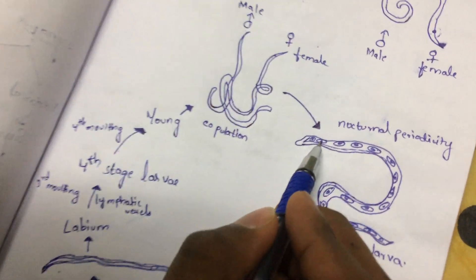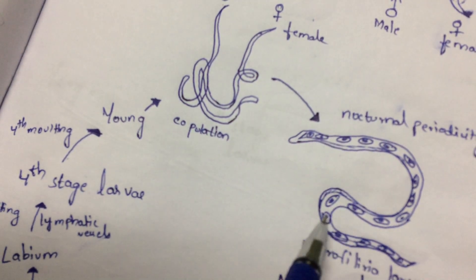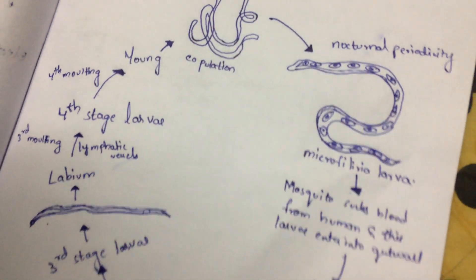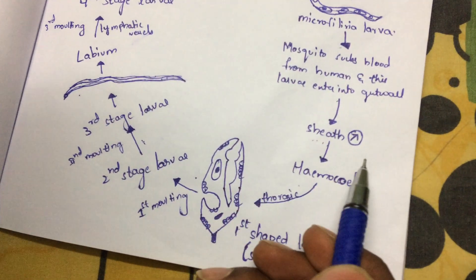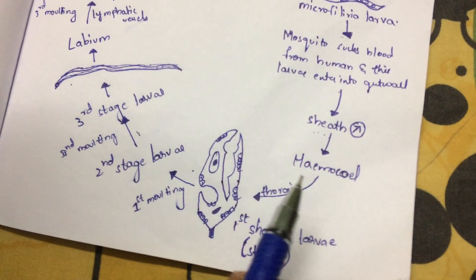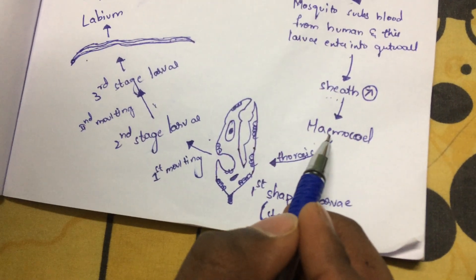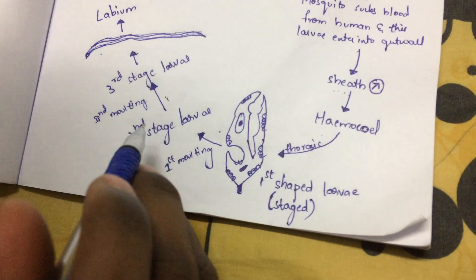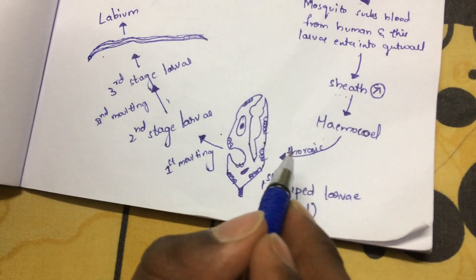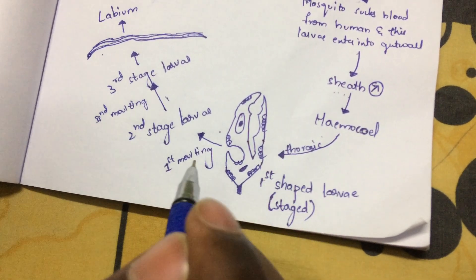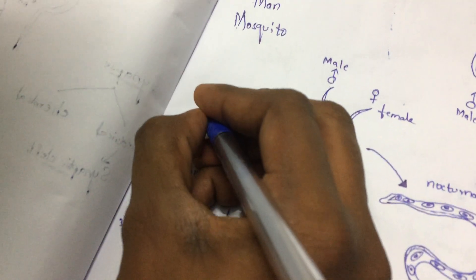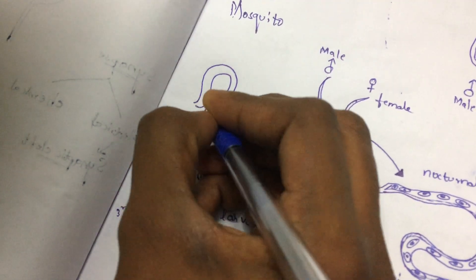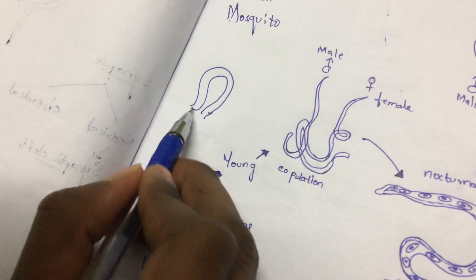The sheath will be dissolved outside due to enzymes present in it — these oval-shaped structures are the enzymes which mainly help in the dissolving of the sheath. When the sheath is dissolved, the remaining part will enter into the hemocoel of the mosquito. Then from the hemocoel, the Microfilaria larva will enter into the thoracic chambers of the mosquito, and at the thoracic chamber it mainly forms a sausage-shaped structure. Sausage shape is nothing but a totally U-shaped curve, and the last two parts are also joined together.